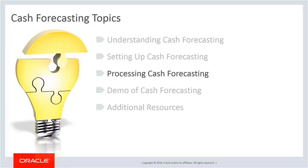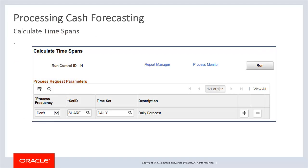Now let's discuss how to process cash forecasting. Use the Calculate Time Spans page to run the Treasury Position Time Spans process, which calculates time spans for a specified time set. For the Time Set field, you can define time spans with varying intervals, such as daily for a week, weekly for a quarter, and then quarterly for a year. The time spans that you define can overlap, run consecutively, or both.